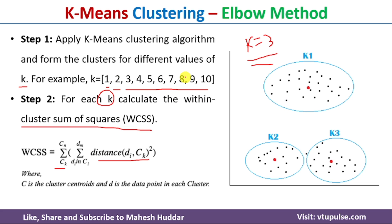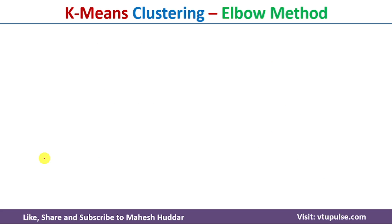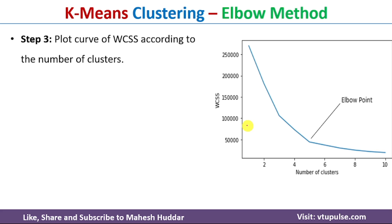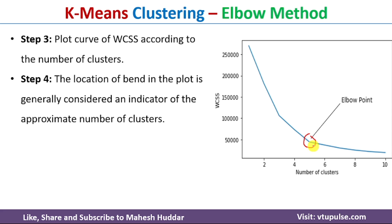Once WCSS is calculated for all values of k, the next step is to plot WCSS against the number of clusters. On this curve, WCSS is on the y-axis and the number of clusters on the x-axis. When k equals 1, WCSS is very high. As the number of clusters increases, WCSS decreases. At a particular point, the curve forms an elbow shape — that is the optimal value of k. In this example, the elbow appears at k equals 3, so 3 is the approximate optimal number of clusters for the given dataset.